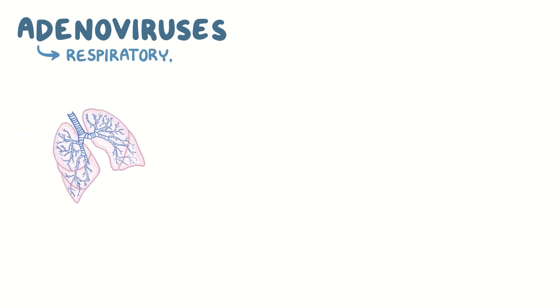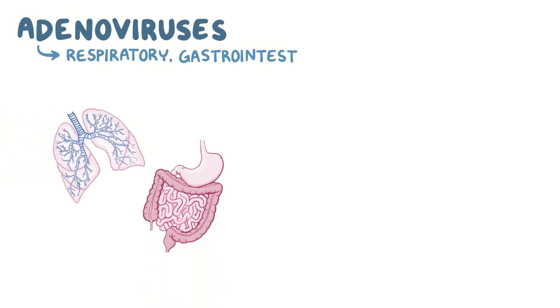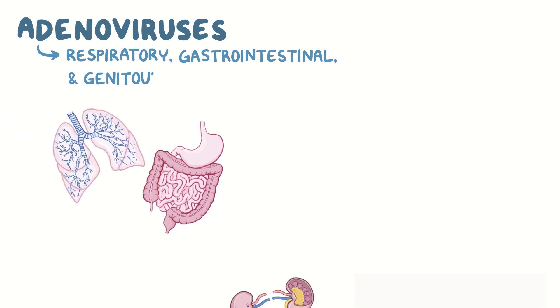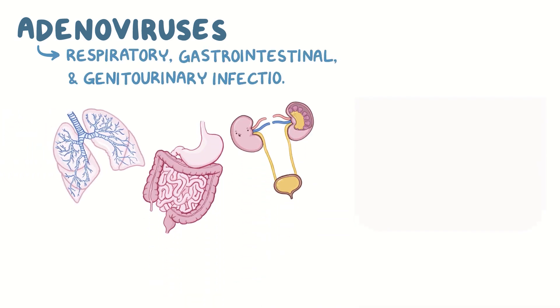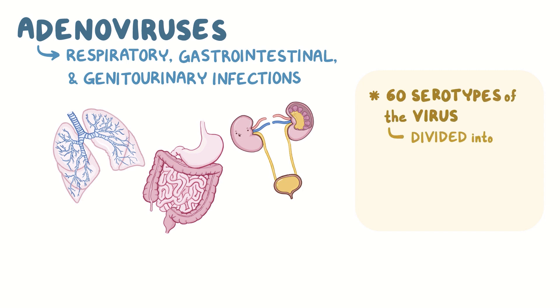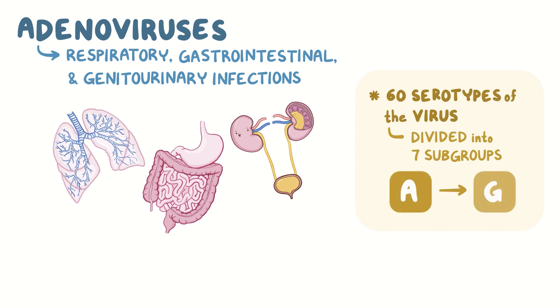Adenoviruses are a group of viruses that cause respiratory, gastrointestinal, and genitourinary infections. There are about 60 serotypes of the virus, divided into 7 subgroups from A to G.